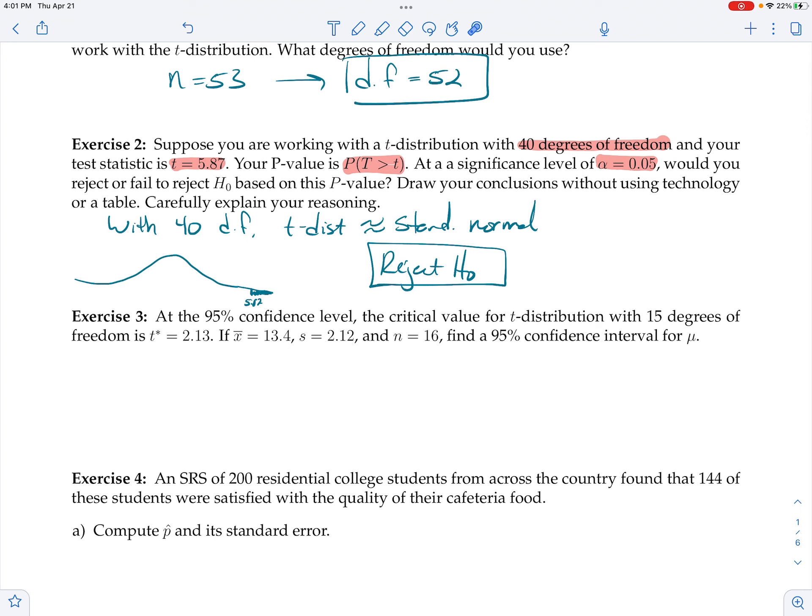Exercise three. We're asked to find the 95% confidence interval for the mean. And so we're told the critical value for the t-distribution with 15 degrees of freedom, and then we're told x-bar, and we're told s, and of course told n. And so we can just write it down. The formula goes, let's recall the formula, x-bar plus or minus t-star times s over square root of n.